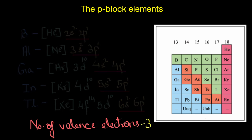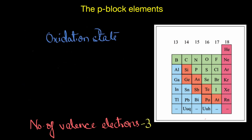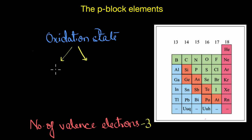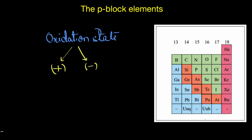Oxidation state refers to the ability of an atom to undergo oxidation or reduction — it is the total number of electrons that is gained or lost by an atom during chemical bond formation. When an atom loses electrons to attain stability, the oxidation state becomes positive, and when it gains electrons to attain stability, the oxidation state becomes negative.